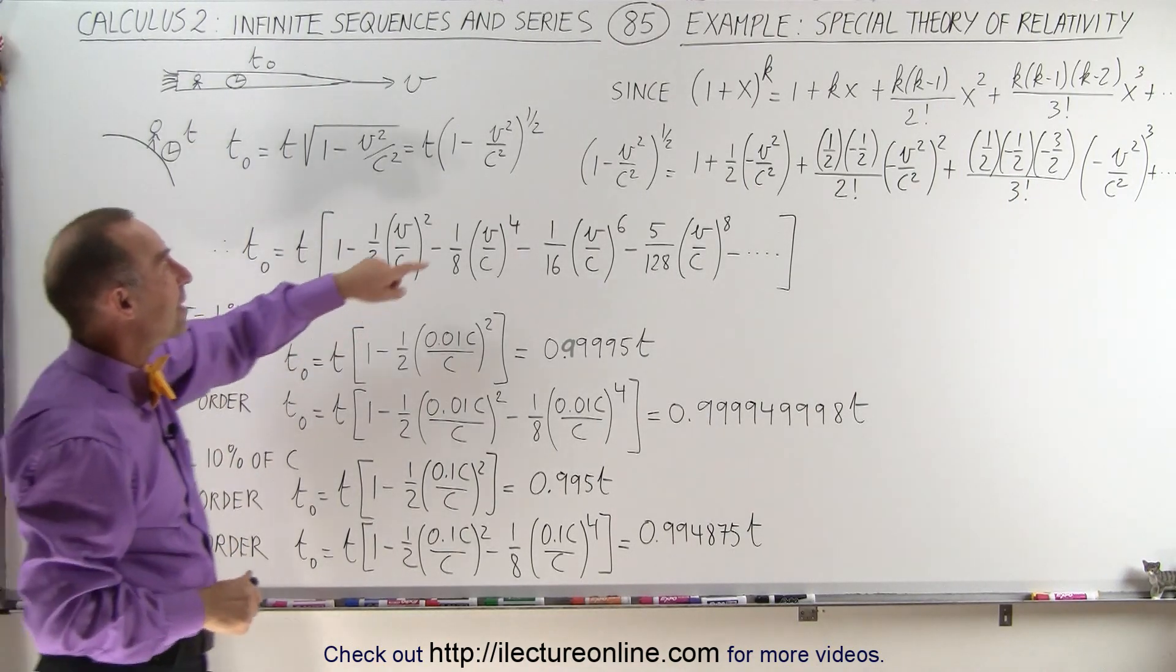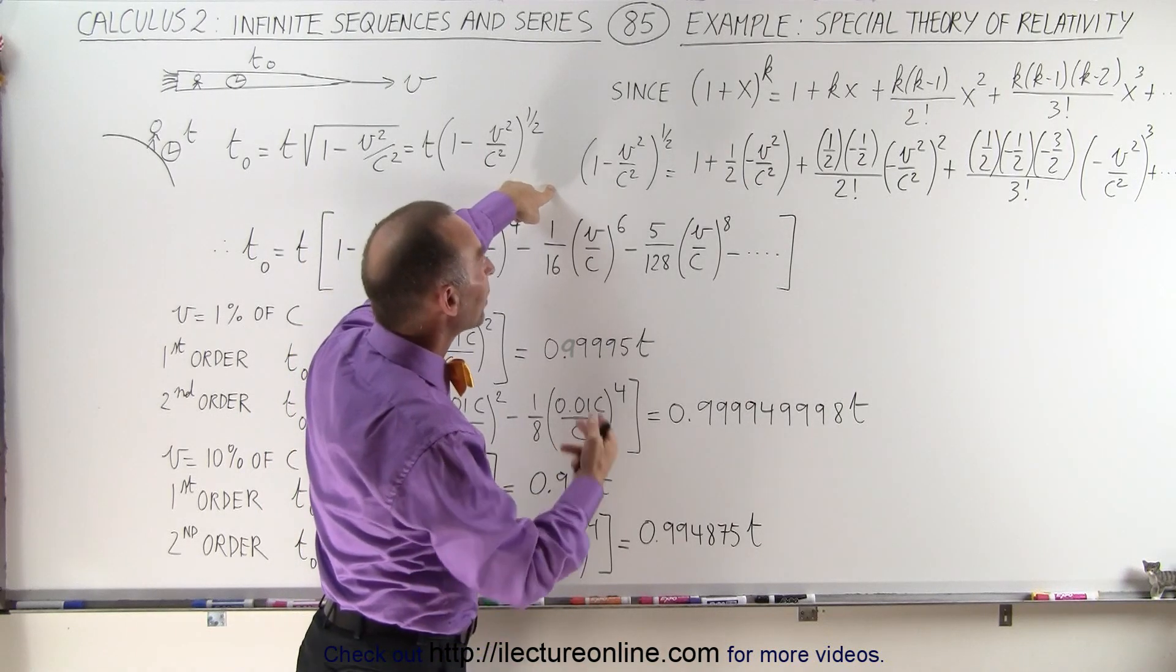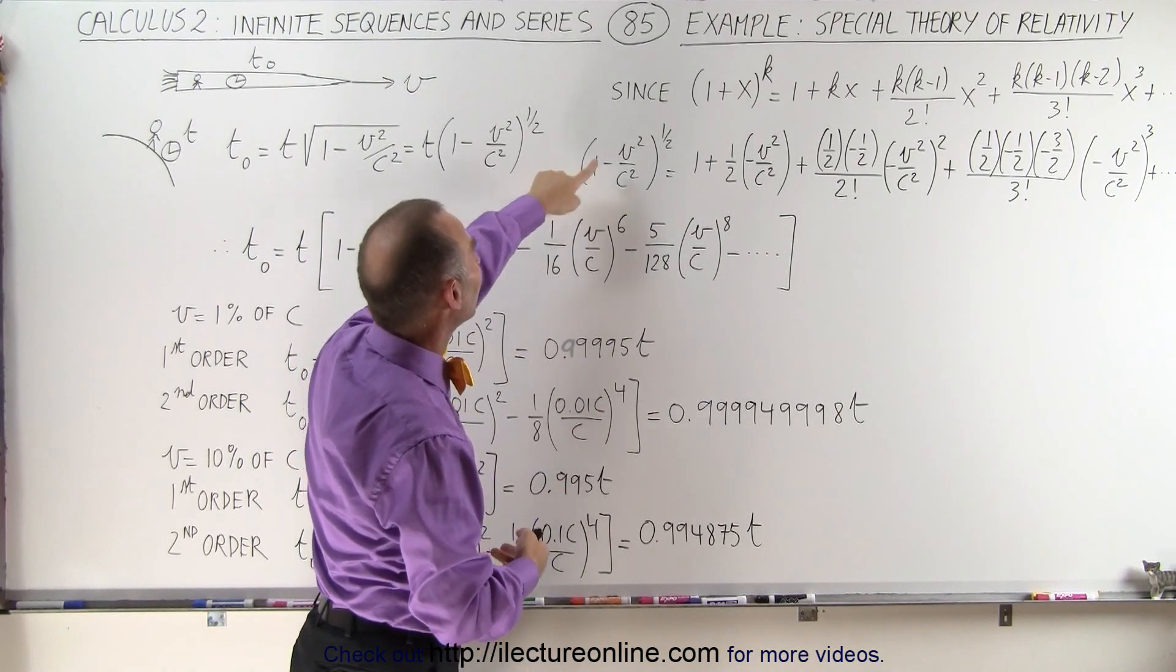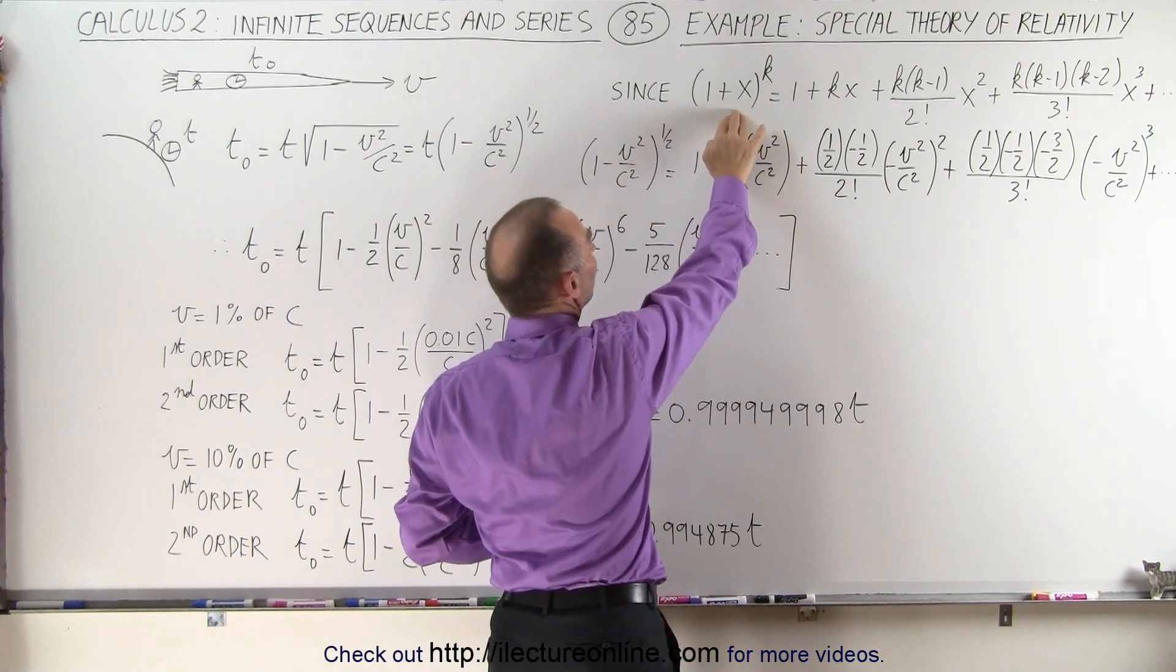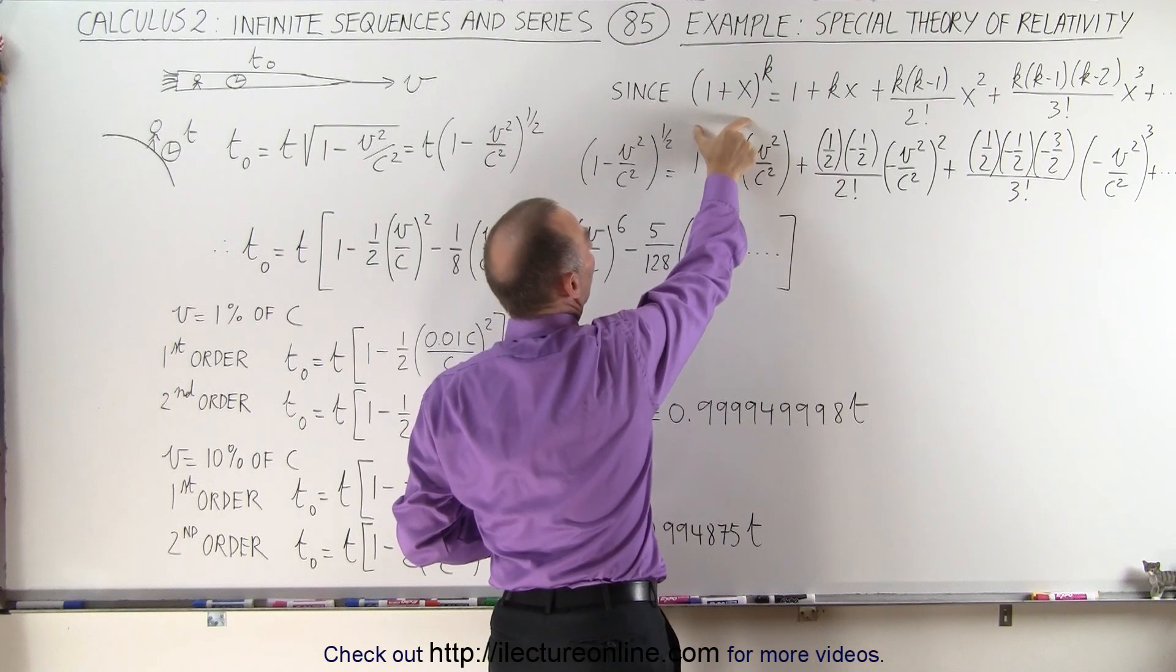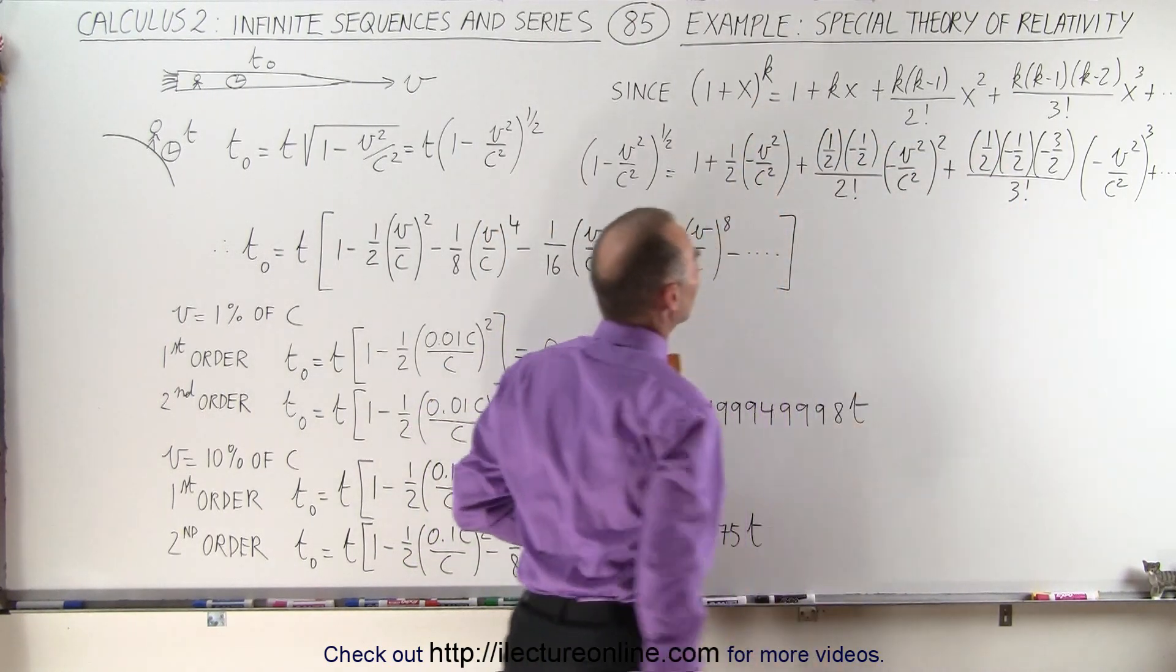So if we use the expansion here, what we call the binomial expansion of the 1 minus v squared over c squared to the one-half power, using the format that we have here, the 1 plus x quantity to the k power. If we use the same format, the expansion will look like this.